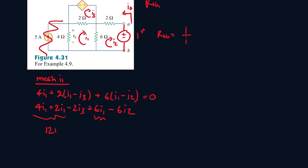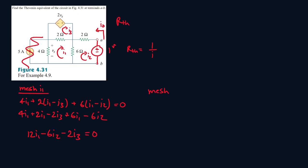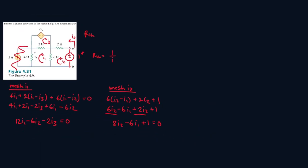So we have this and we have this. So this will be 12I1 minus 6I2 minus 2I3 equals 0. Now let's focus on mesh I2. So it will be 6I2 minus I1 plus 2I2 plus 1 volt. Let's FOIL everything out.